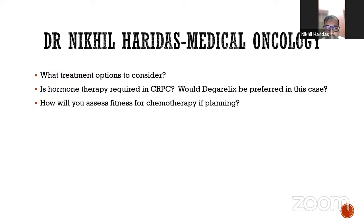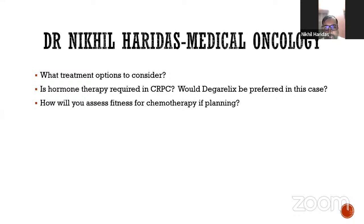Treatment options in metastatic CRPC depend on what was previously offered — whether it was a de novo diagnosis or prior treatment with radiation, and whether the patient previously received a novel antiandrogen like abiraterone. Patient factors including performance status, potential toxicities, comorbidities, and cost also come into play. For patients not previously treated with systemic therapy beyond ADT, options include androgen receptor signaling inhibitors — abiraterone, darolutamide, apalutamide, enzalutamide — or docetaxel in the first-line CRPC setting. Assessing fitness for chemotherapy involves no specific fixed rules but requires careful evaluation.